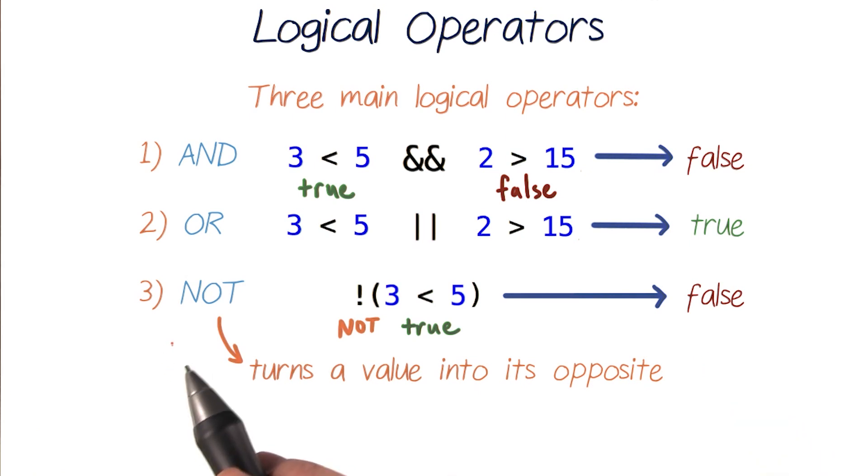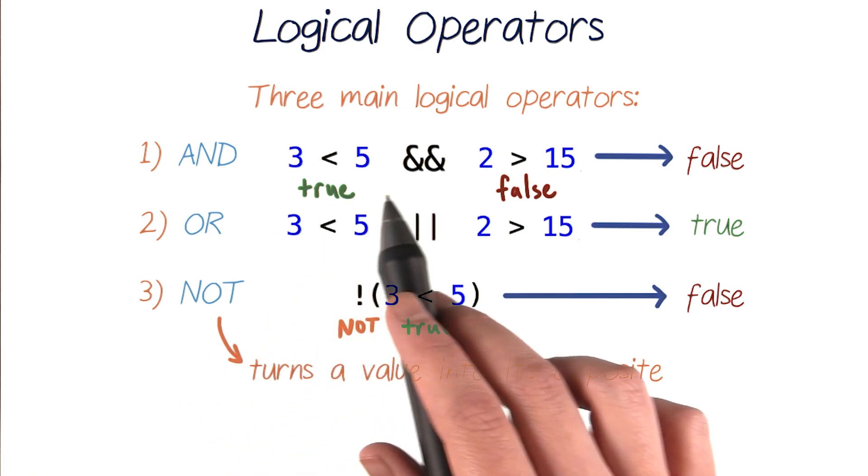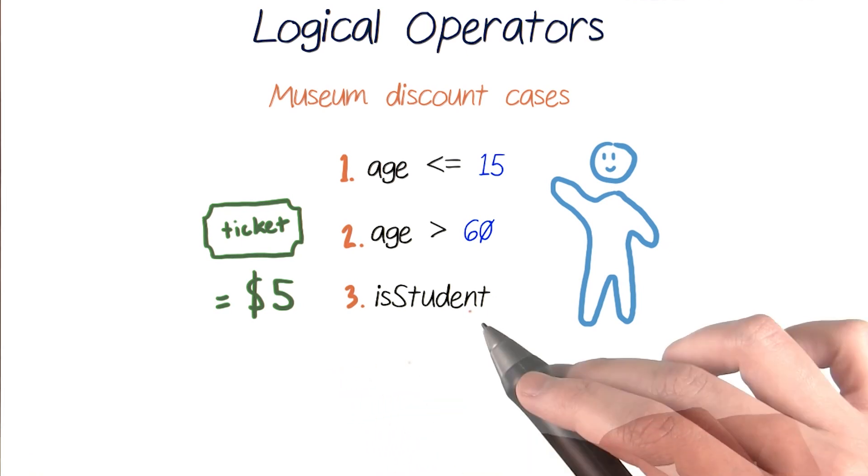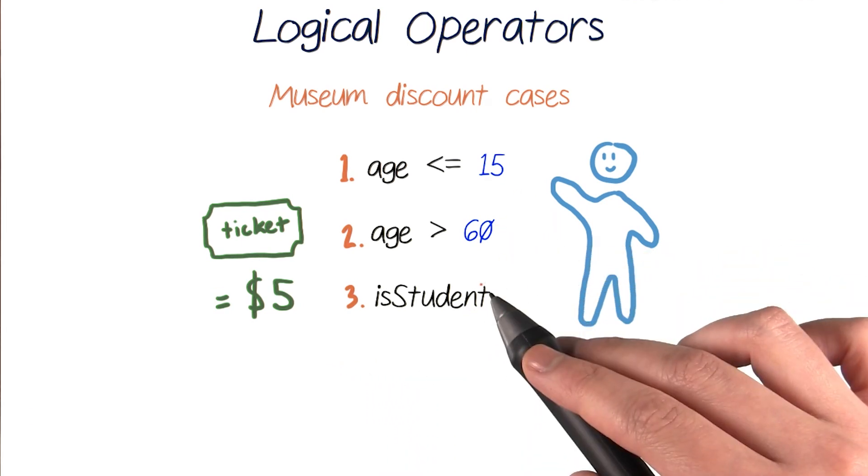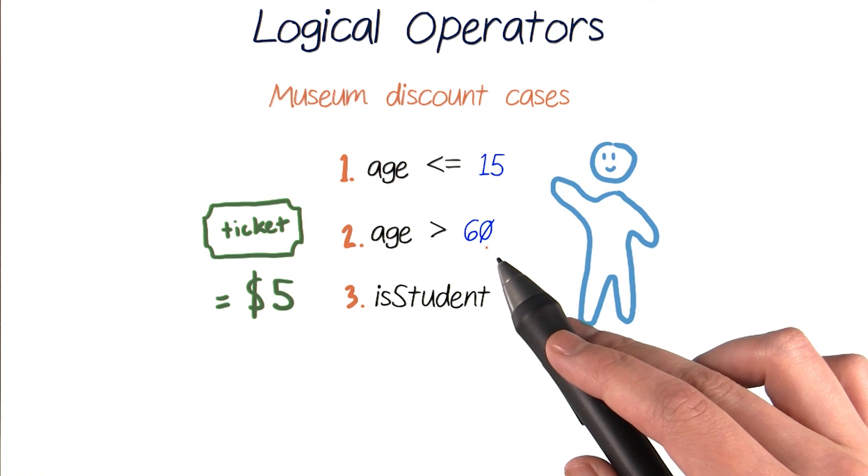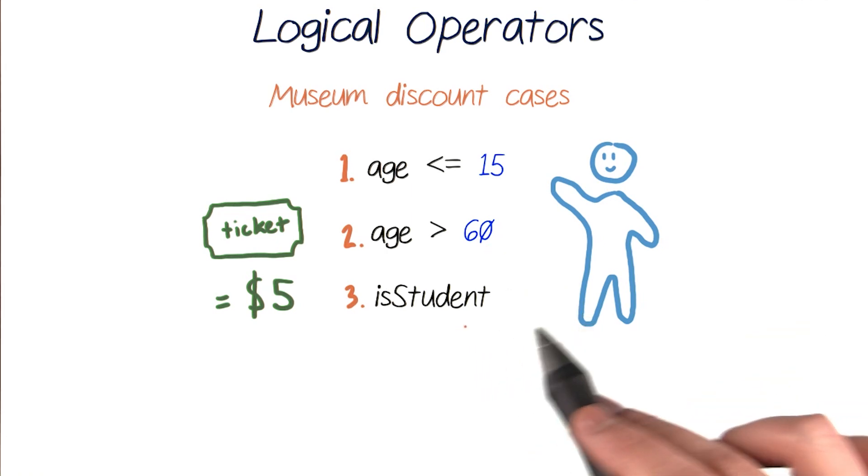And now, if we use these three operators to connect expressions, we can combine as many as we want into one larger test. And that's what we'll want to do for our museum code. In the case of our museum ticket discount, we're checking three separate test conditions: first, if someone's age is less than or equal to 15 years old; then, if their age is greater than 60; and finally, if a person is a student.